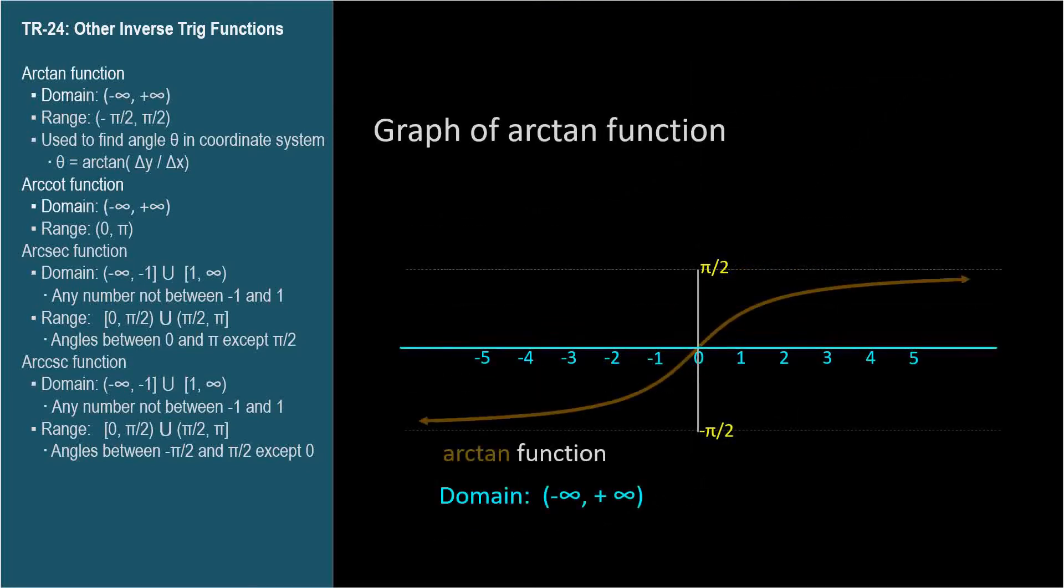The domain of the function is any ratio between negative infinity and positive infinity. This means the arctangent function will tell us the angle whose tangent is any number. The range of the function, that is, the set of angles we can get back as an answer, is between but not including negative pi over 2 radians to pi over 2 radians.